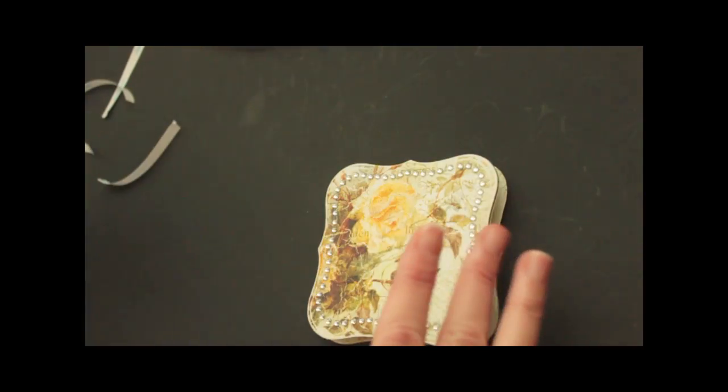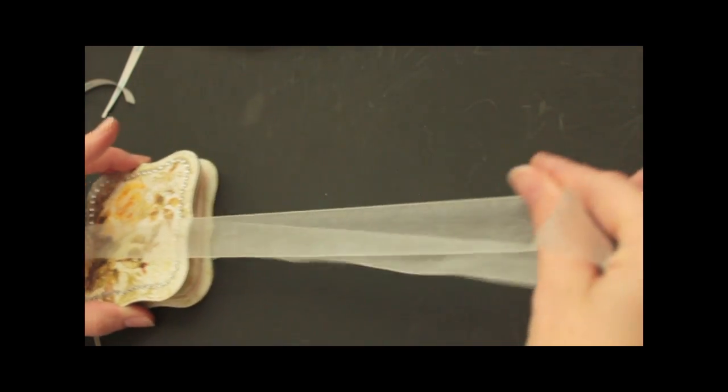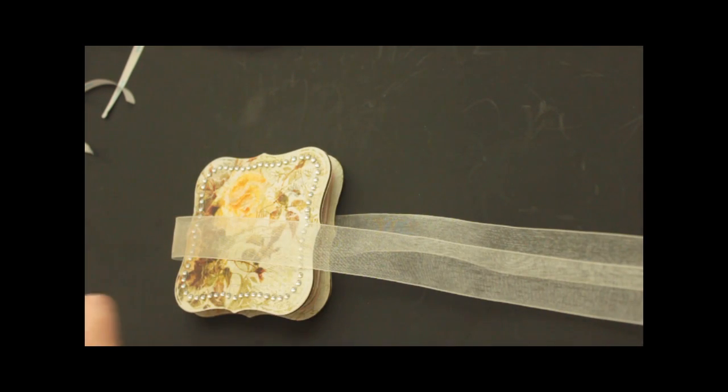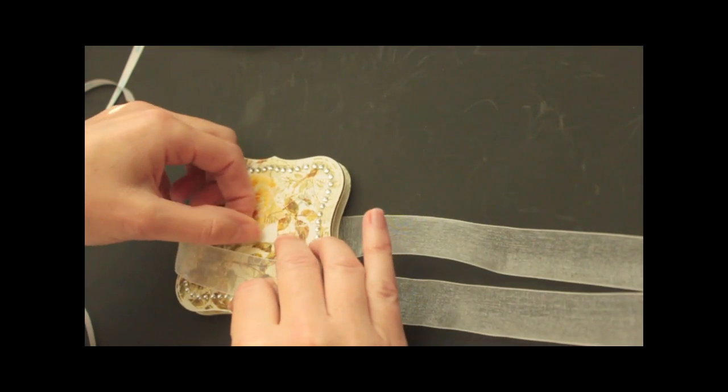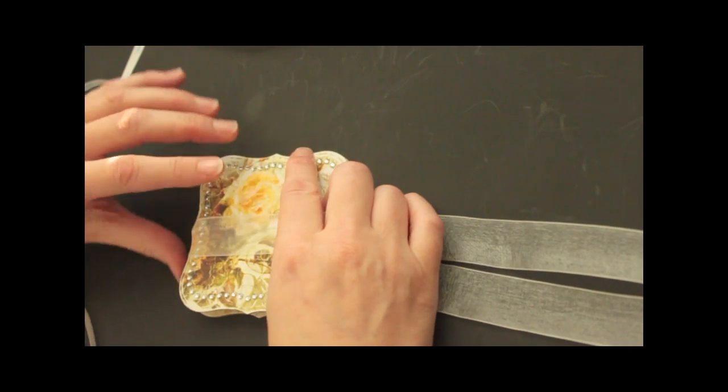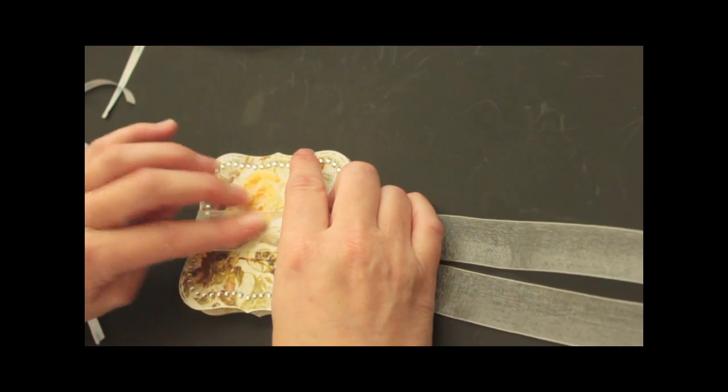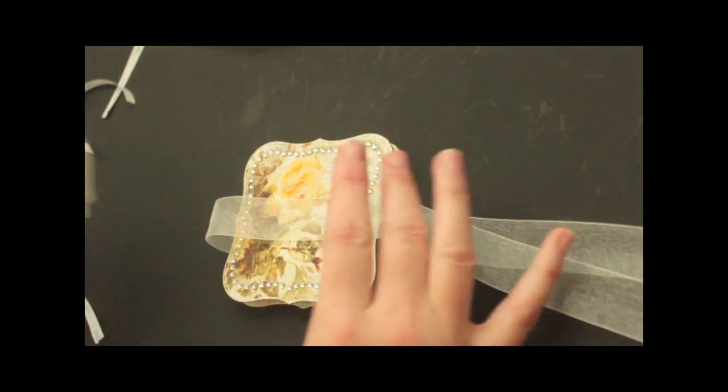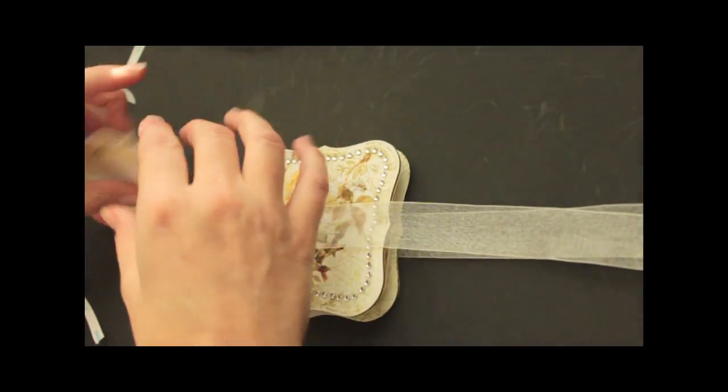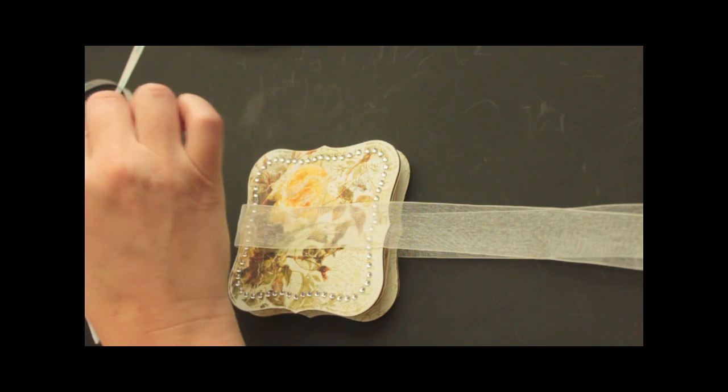Now you will need some ribbon to hold your card shut. Just cut yourself a long piece. You can always cut it down. And then I just add a little bit of adhesive in the center to hold my ribbon. And so nobody will see this, I'm adding a focal point.